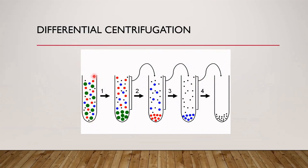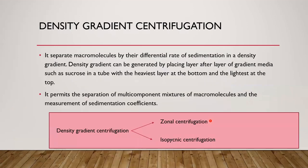In the diagram of differential centrifugation, the homogenate contains different cell organelles. In the first step, centrifugal force is applied and the heaviest particles sediment. Then the supernatant is taken and the centrifugation speed is increased in RPM to obtain the next largest material. By successively increasing the RPM, we can collect all the materials from the homogenate.